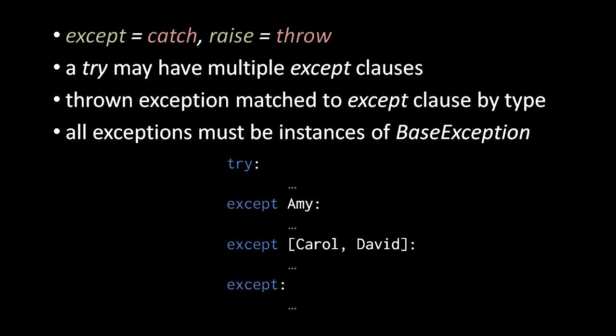That aside, the big new idea with exceptions in Python is that an exception thrown in a try is matched to an except clause by type. That's the one big conceptual change. We have a few more things to say about exceptions which we'll cover in the supplementary material.